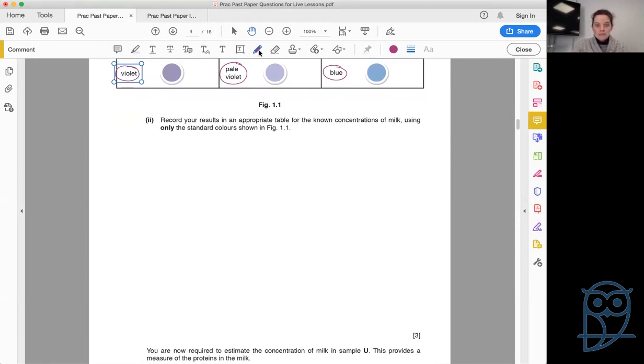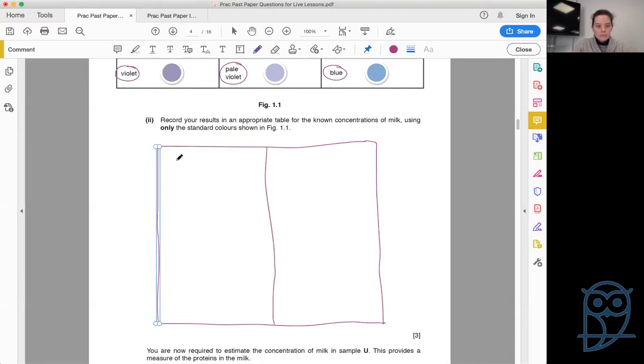So our appropriate table—we would be drawing our cells with a ruler and a pencil, beautiful straight lines. We're only going to have two columns in our table because all we're looking at is the known concentration, so the percentage concentration of the milk, and then the result we're reporting, just one result, is the color of the mixture. In your results tables, you very simply have your independent variable, what you've changed, and then your dependent variable, how it has responded.